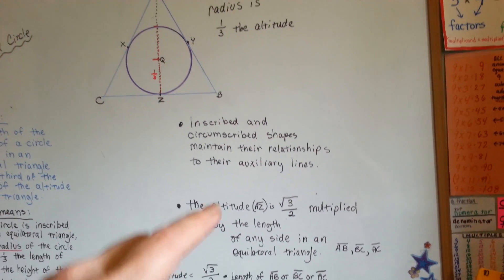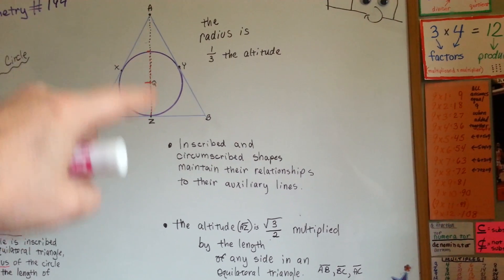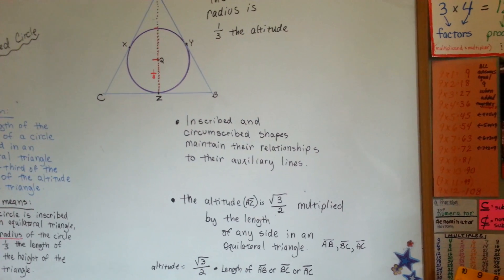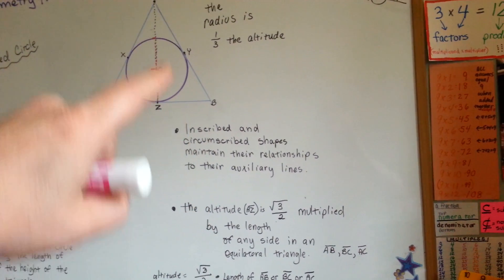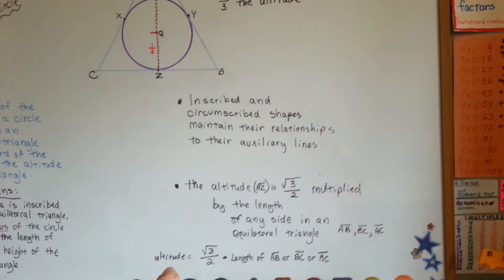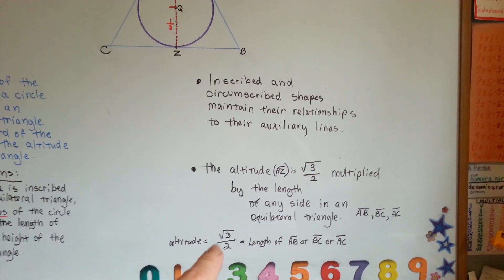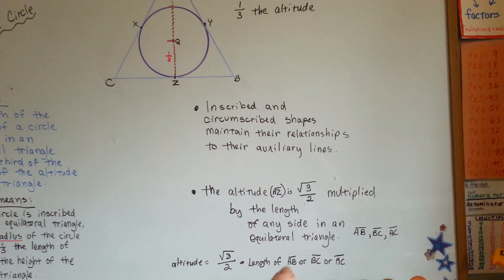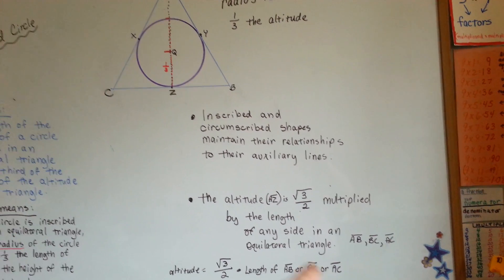So, the altitude az right here is the square root of 3 over 2 multiplied by the length of any side in an equilateral triangle. Make sure you realize it says equilateral. That means the altitude is square root of 3 over 2 times ab or bc or ac.